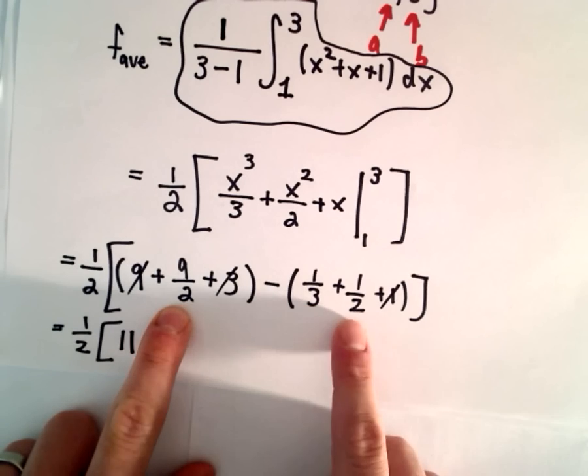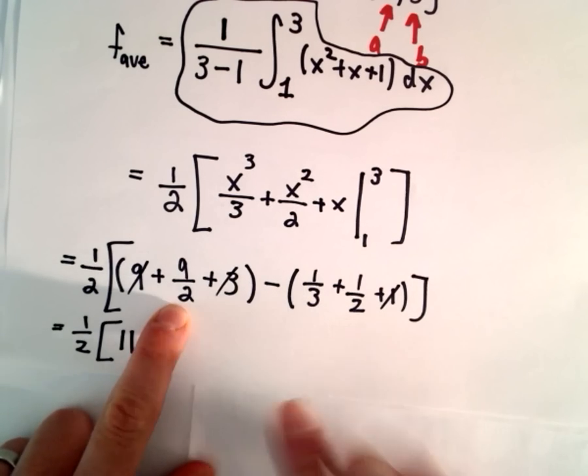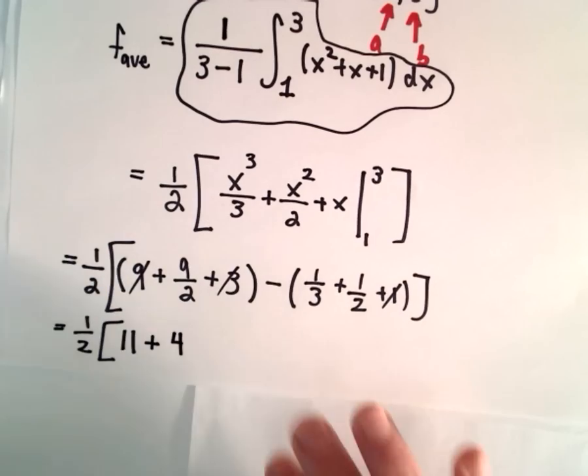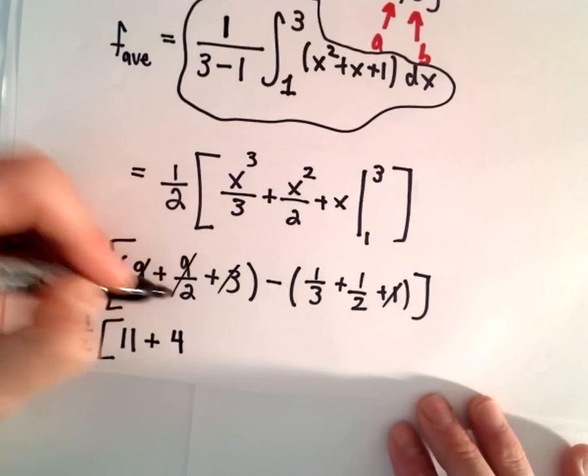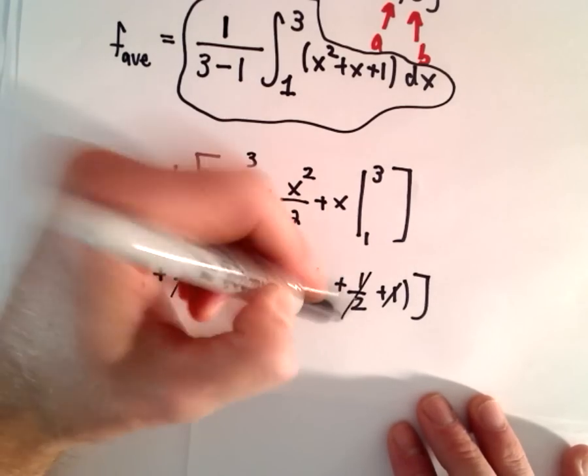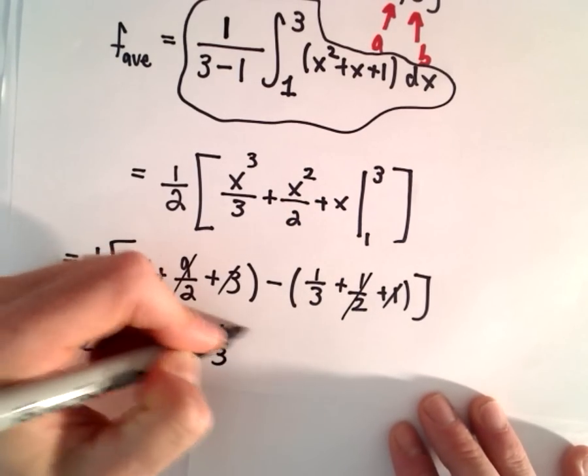9 halves minus 1 half, that's going to give us 8 halves. And 8 halves is just the same thing as 4. So that'll take care of those two terms. And then we simply have minus 1 third.